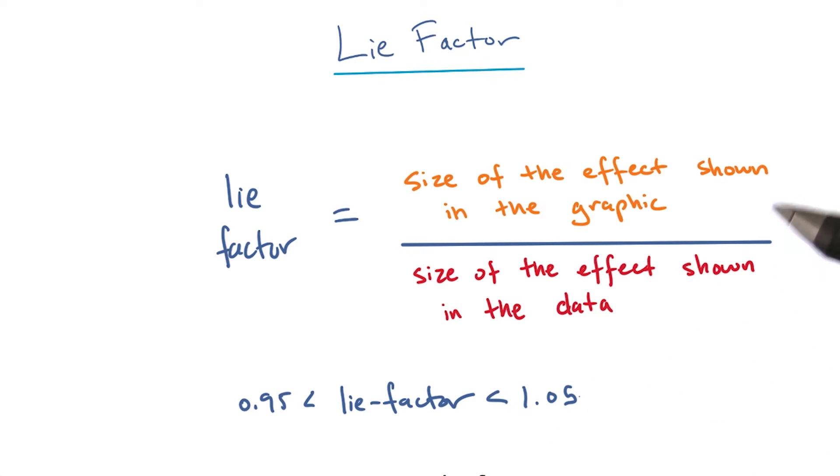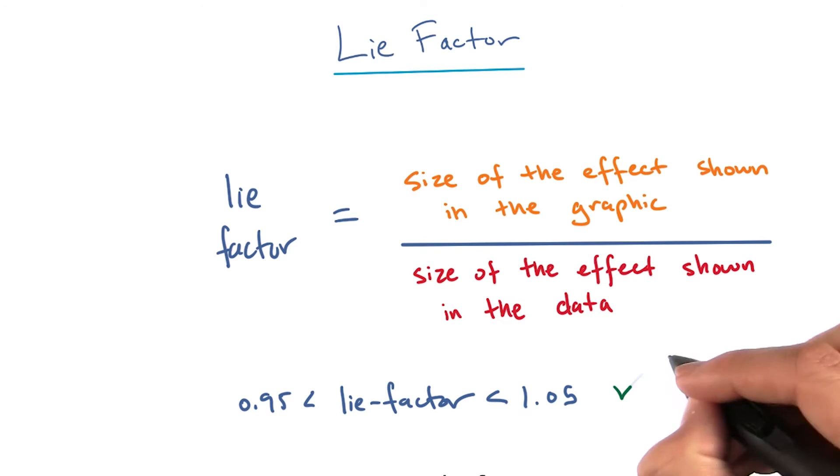A lie factor of 1 is ideal because the effect shown in the graphic would exactly match the data. But due to some jitter in how we represent data in graphical form, having a lie factor within this range is typically seen as very good. A visualization with a lie factor in this range has high integrity and represents the data accurately.